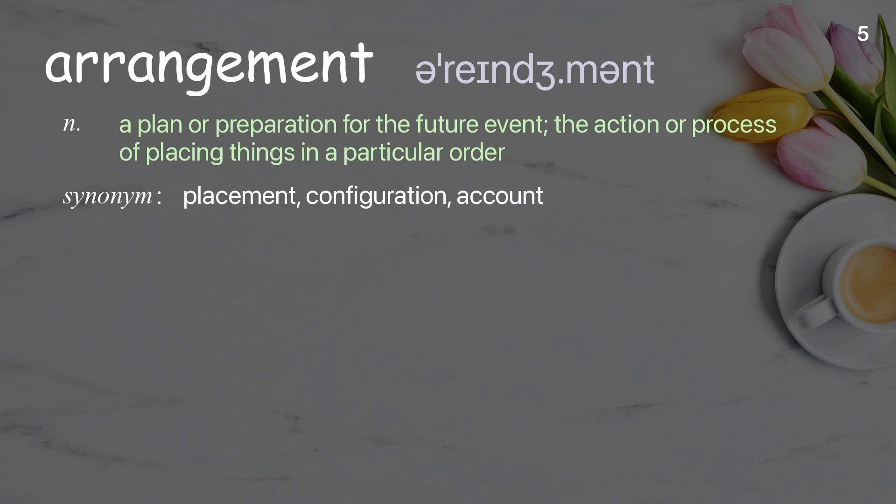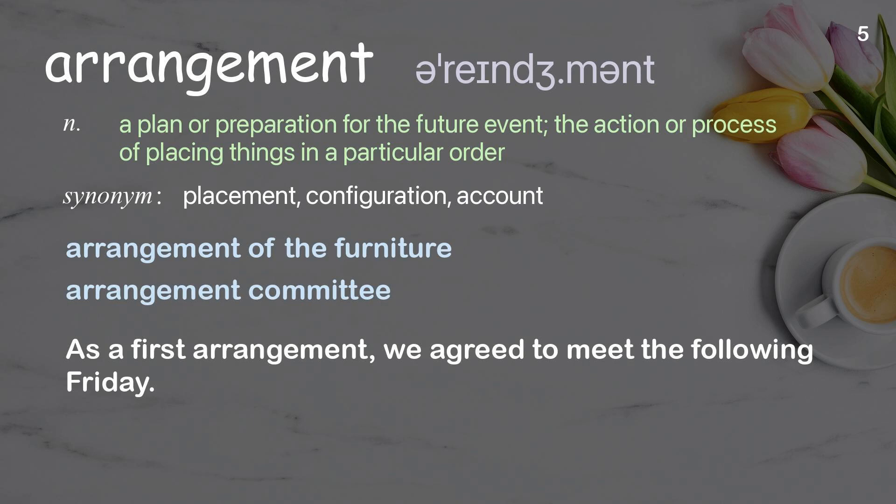Arrangement. A plan or preparation for a future event; the action or process of placing things in a particular order. Examples: arrangement of the furniture, arrangement committee. As a first arrangement, we agreed to meet the following Friday.